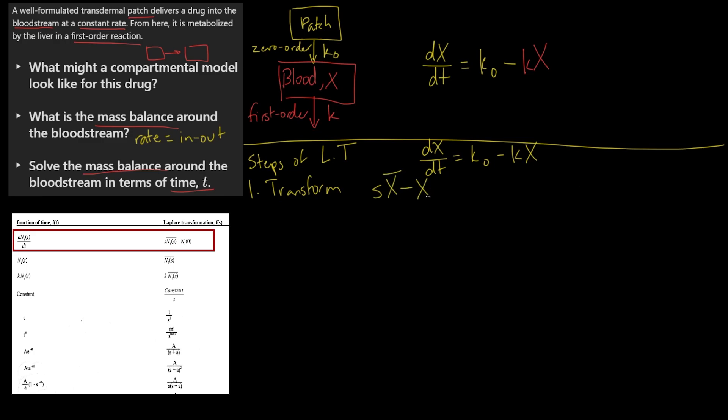We look at our chart. dX/dt turns into sX̄ minus X₀, which is the initial amount in X. That's equal to k₀ minus kX is not on the chart, but we can break this apart into two individual pieces. k₀ is just a constant, and a constant would transform into a constant over s. Negative kX is actually just a constant times X, which transforms into a constant times X̄.